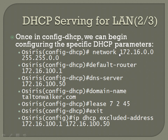Remember you're in DHCP configuration mode, not global configuration or otherwise. The next thing you're going to want to do is define what the router's IP is — in this case it's going to be the IP you just assigned to that LAN interface. So: 'default-router' followed by the IP address.